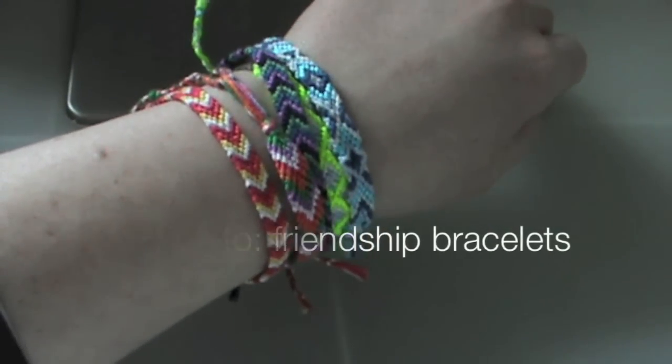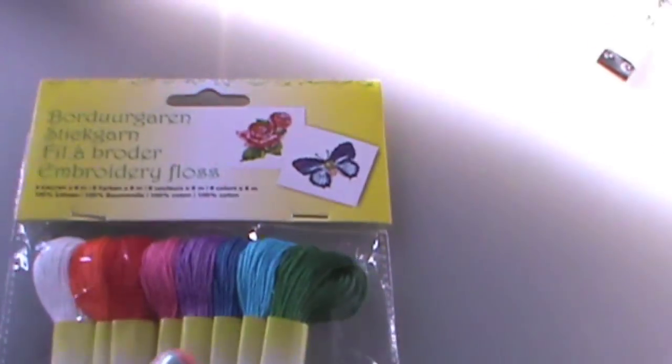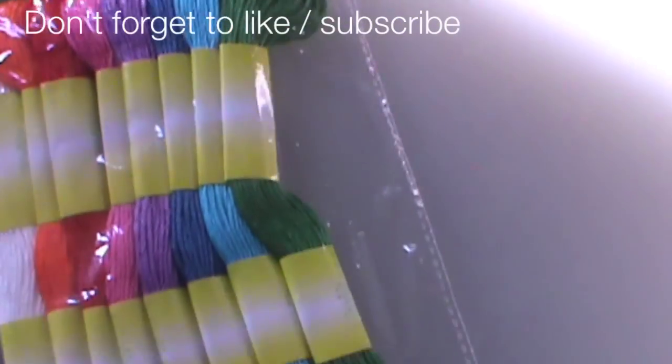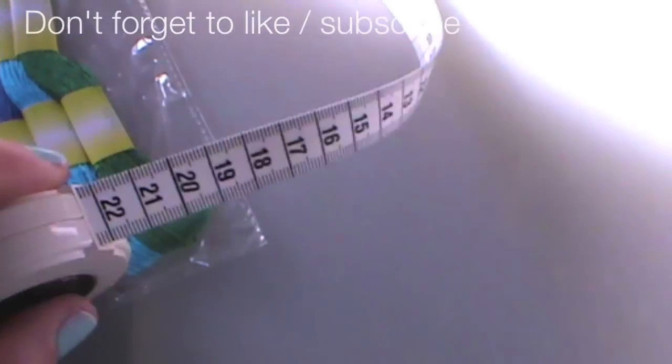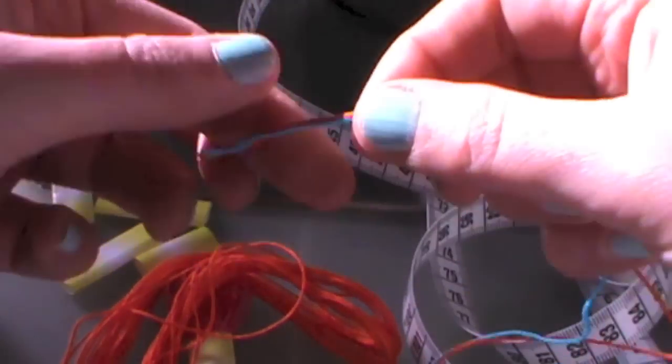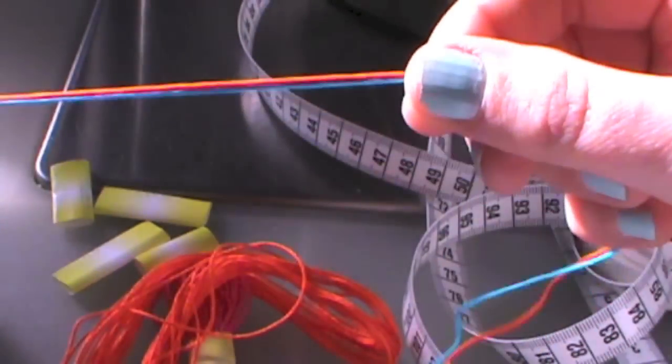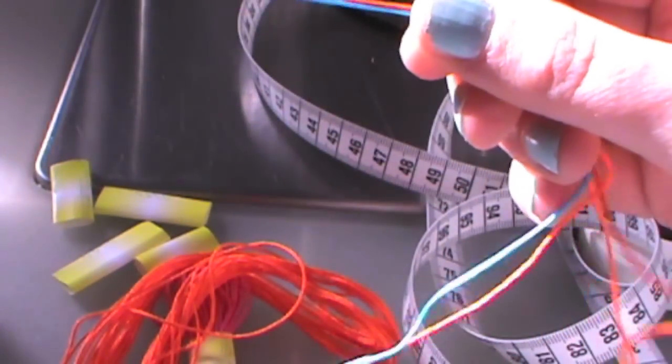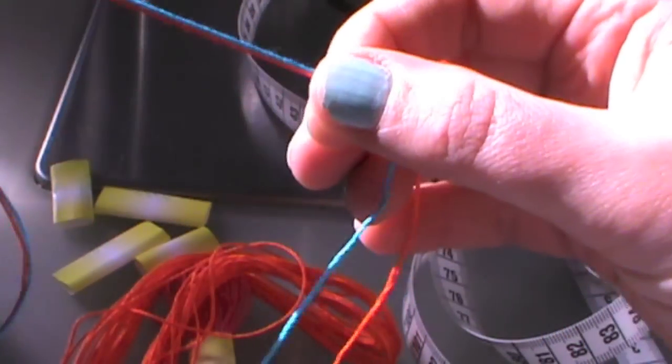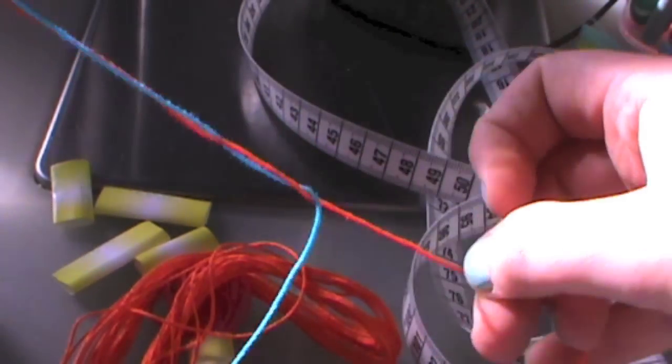Hi guys, today we're going to make friendship bracelets. To do that we need embroidery floss in four colors and some measuring tape. We start off by measuring up one piece of embroidery floss at 175 centimeters or 70 inches.